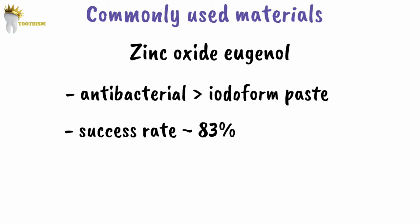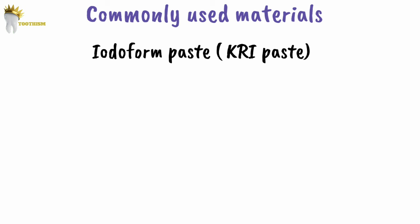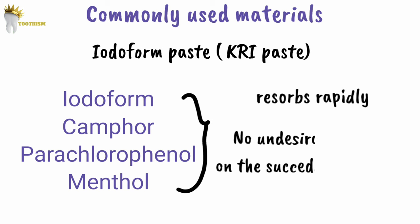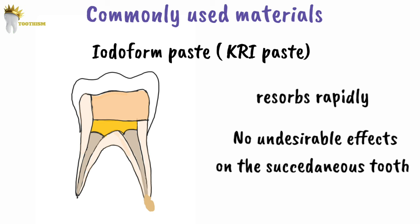The second material is iodoform-based paste, also known as KRI paste. It is a mixture of iodoform, camphor, parachlorophenol, and menthol. It resorbs rapidly and has no undesirable effects on the succedaneous teeth. If the paste extrudes into the periapical tissues, it is rapidly replaced with normal tissue, and sometimes the material is also resorbed inside the root canal.